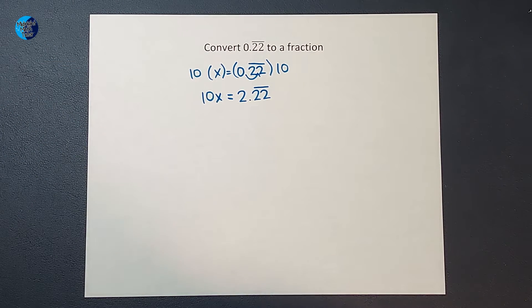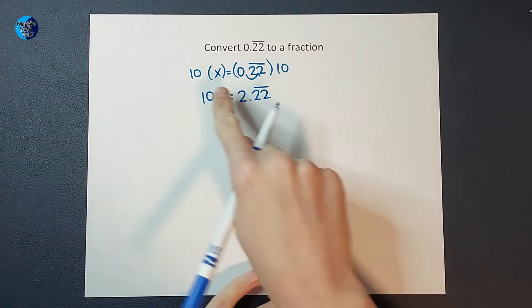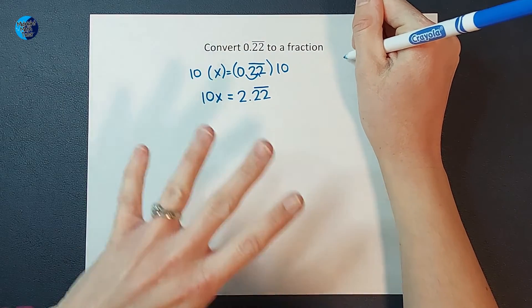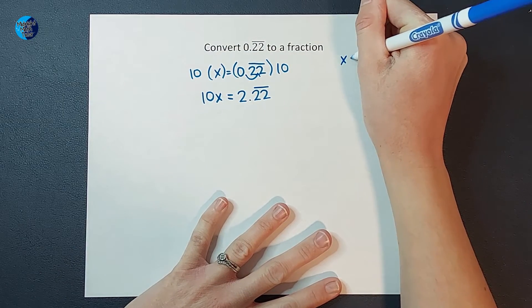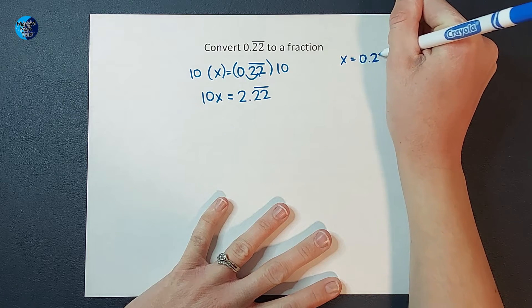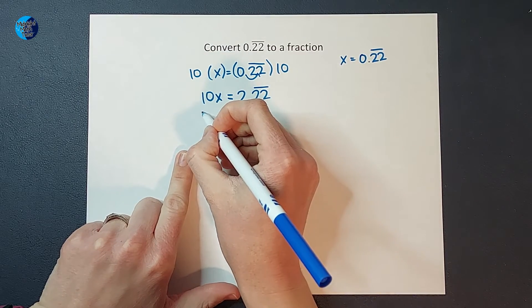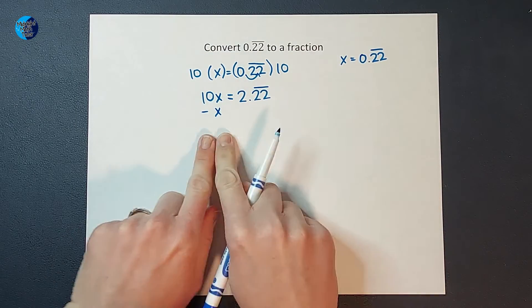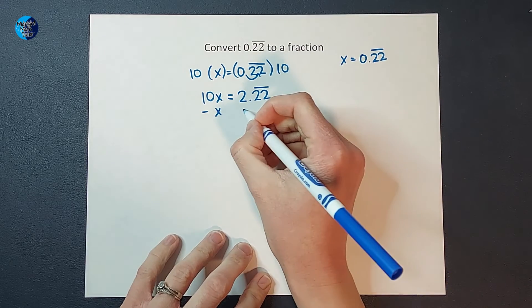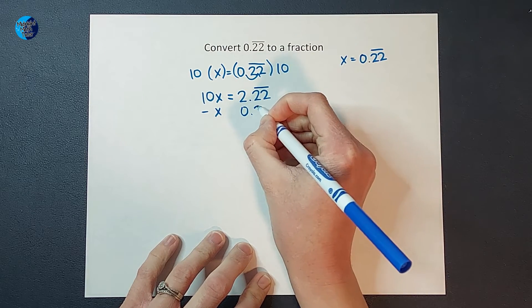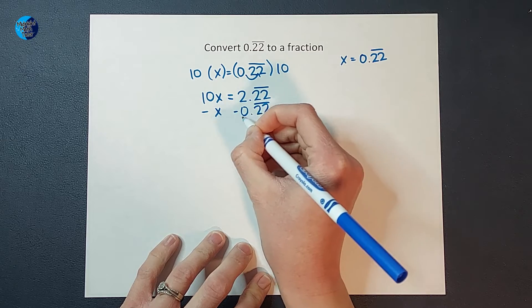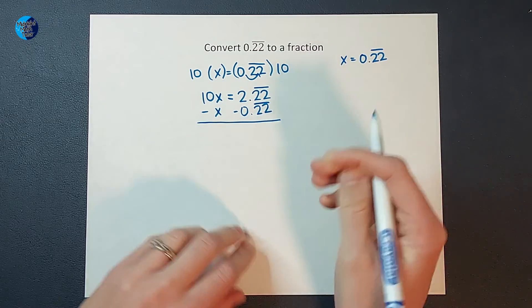So the next thing I am going to do is I am going to subtract x from both sides, but it's going to look a little different on each side. Remember right here what we said. We said in this scenario, x is equal to 0.22 repeating. Correct? So on this side, I'm going to subtract x. On this side, I'm going to subtract 0.22 repeating. Because remember, in this scenario, they're the same thing.